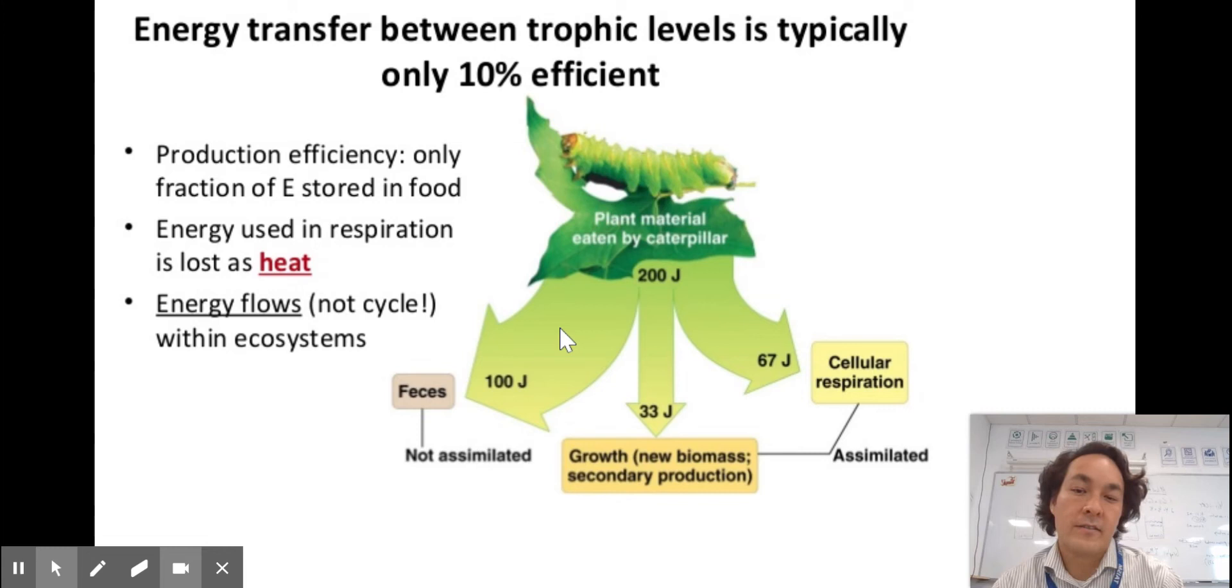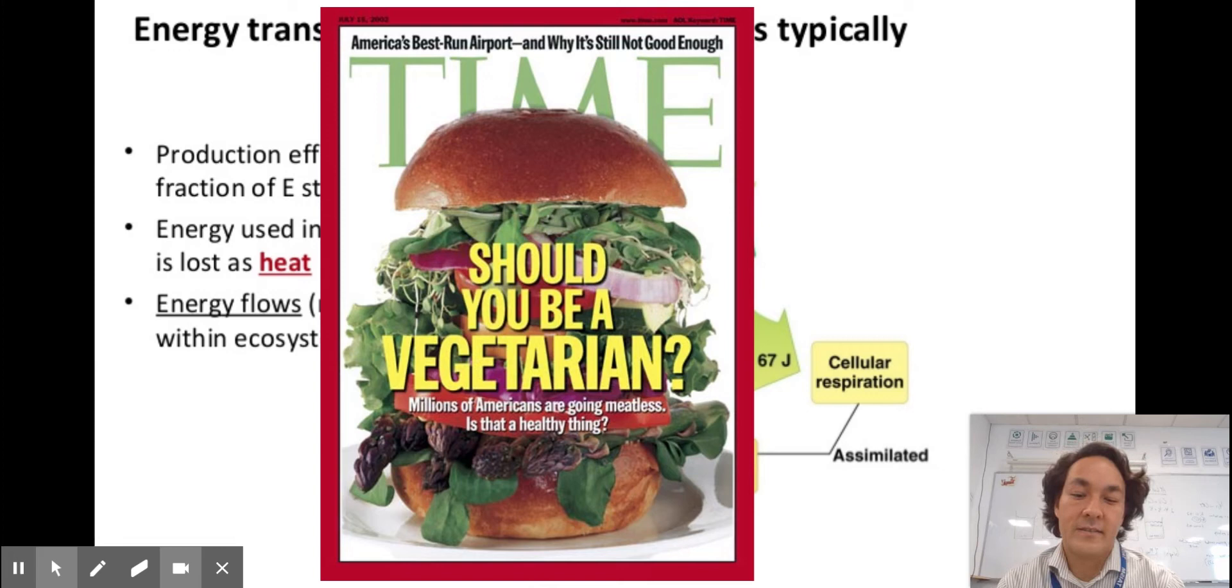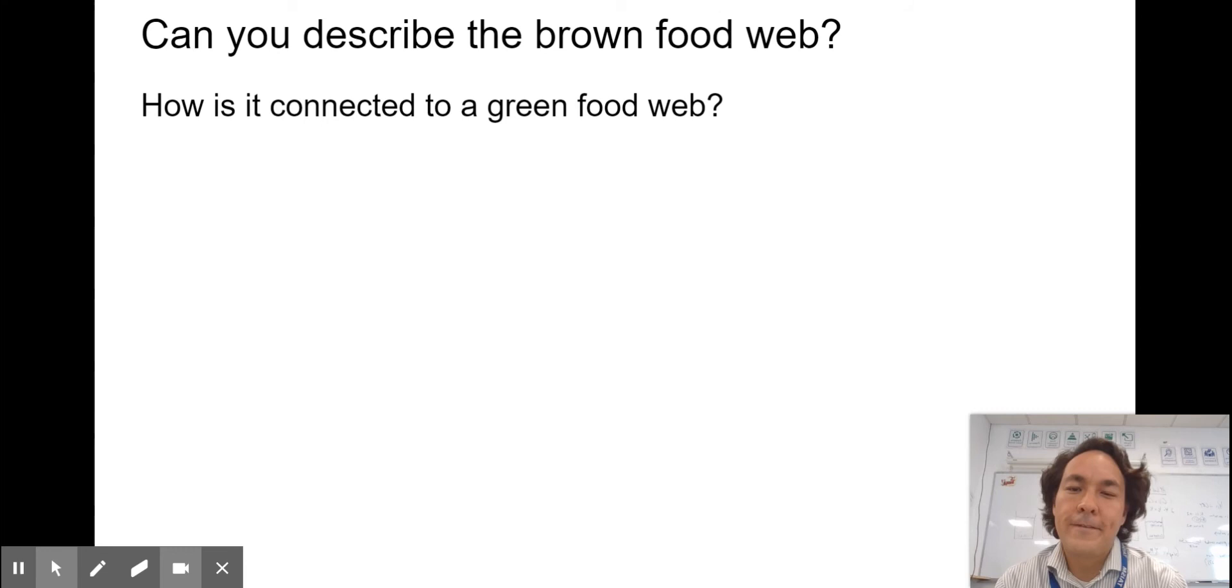So there's some implications of energy transfer between levels being only 10% efficient. The biggest implication is that food chains are limited in the number of levels that they can have. There's another implication of should you be a vegetarian. If it takes that much energy to grow meat just for us to eat as humans, would the world be better off if we removed meat and instead grew crops.